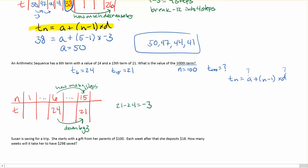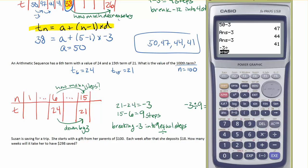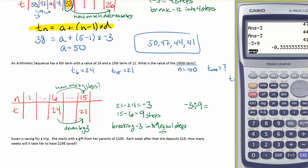So I've got to just think about what's the difference between these? The difference between those, that's 21 minus 24 is equal to negative 3. I'm going down by 3. So it's a total of negative 3. And then how many steps did I take to do that? To figure that out, I need to just know the difference between 6 and 15. And that's going to be 9. So I know I did it in 9 steps. So here, I need to break negative 3 into 9 equal steps.